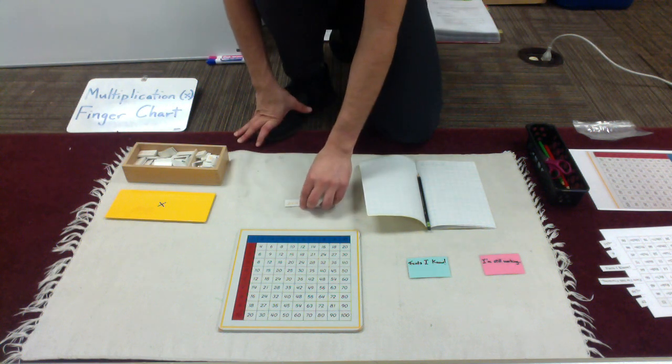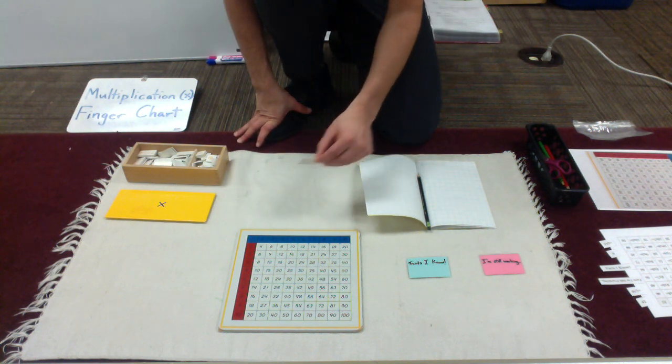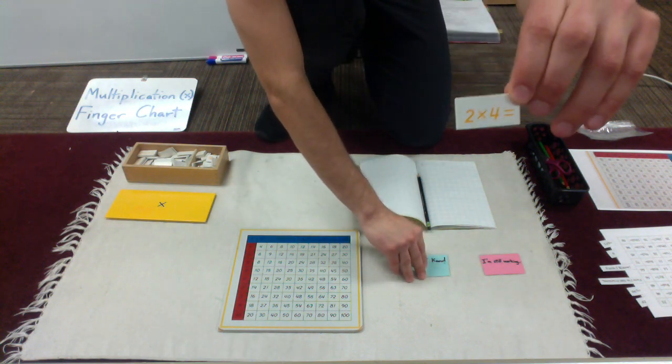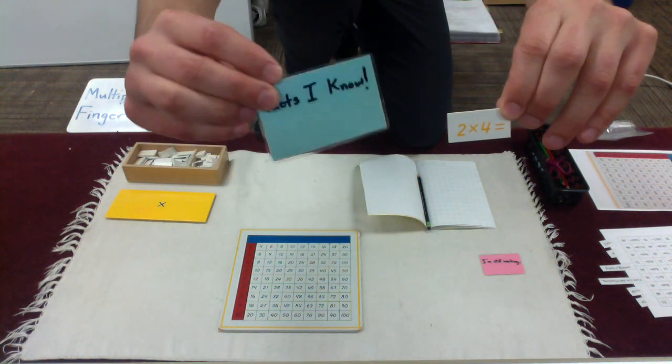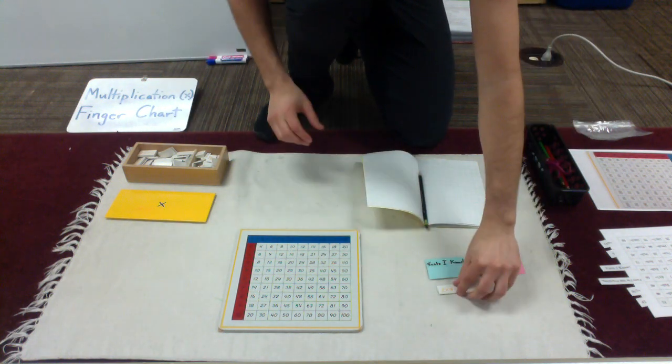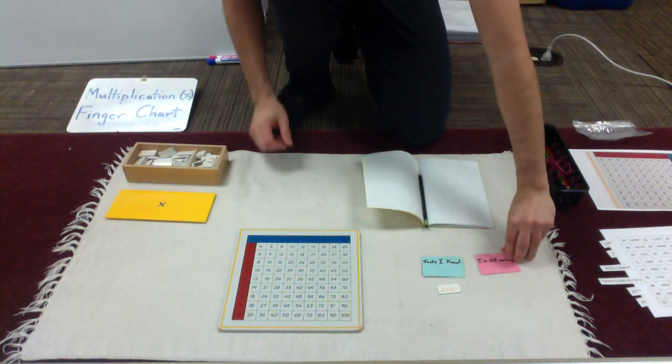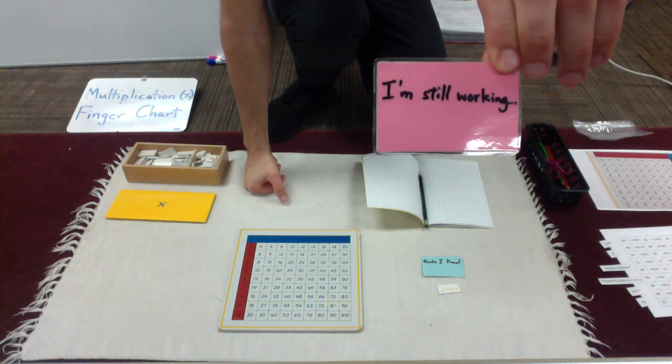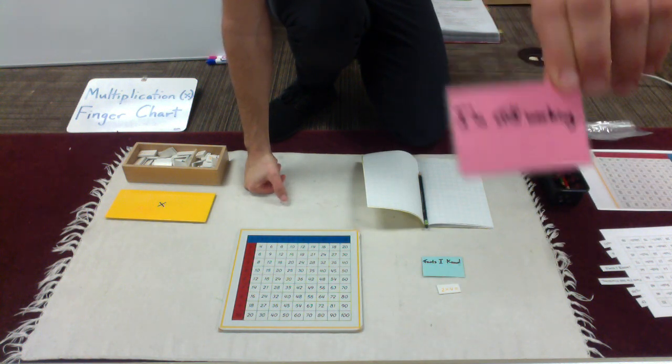Now, as you go, you might start to encounter facts that you know. 2 times 4 was, in fact, a fact that I know. So I would place it underneath my facts that I know. In case I encounter one I am still learning, I'll put it under the I'm still working section.